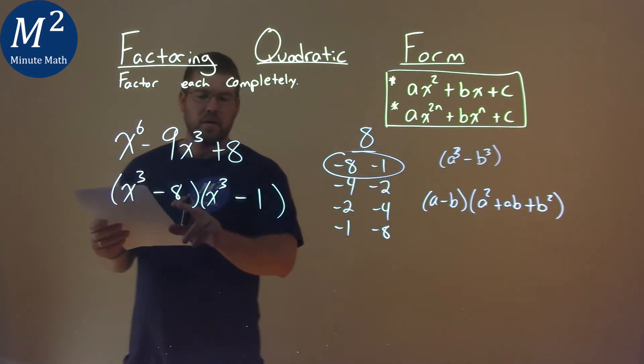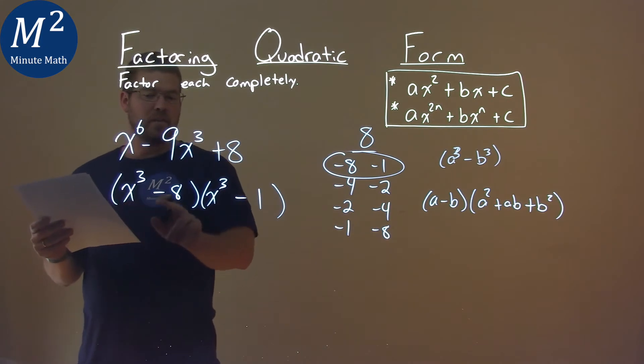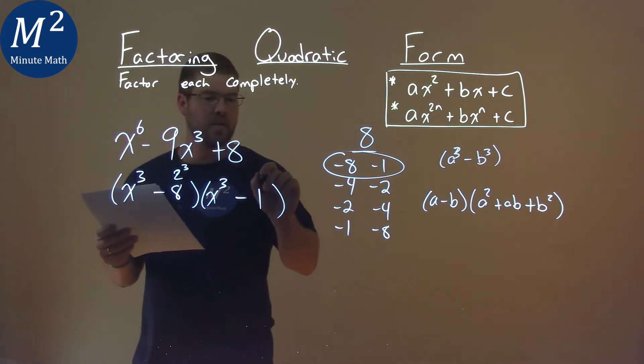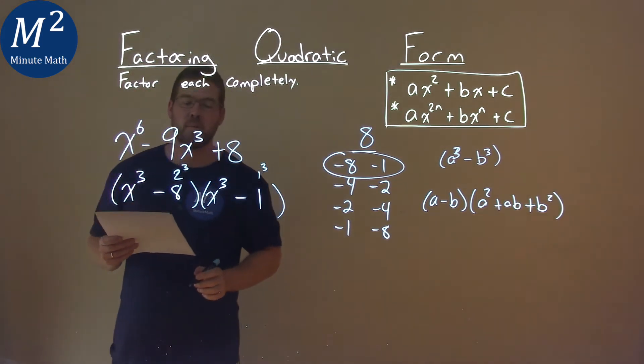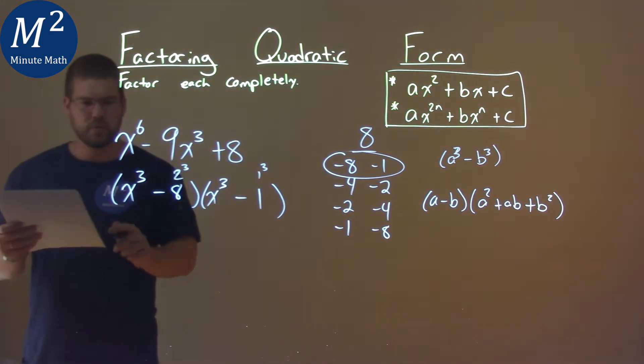If our a value is x and our b value here for this one is a 2, right? 2 cubed is equal to 8, and 1 cubed is actually also equal to 1. So let's keep that in mind. So let's use the difference of cubes formula.